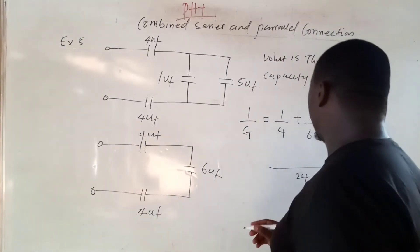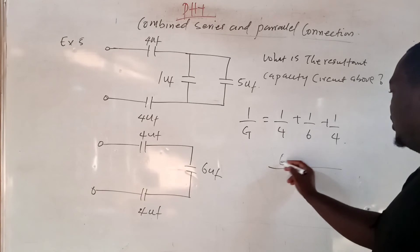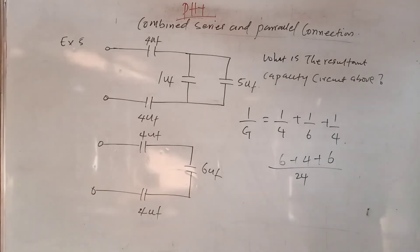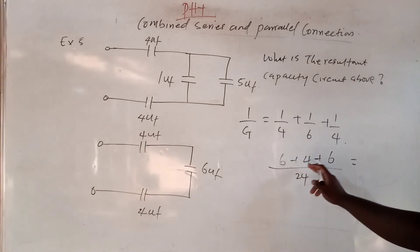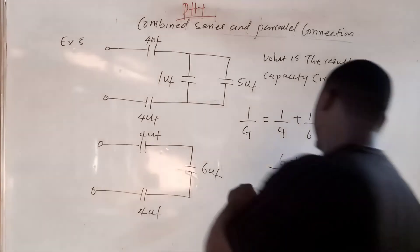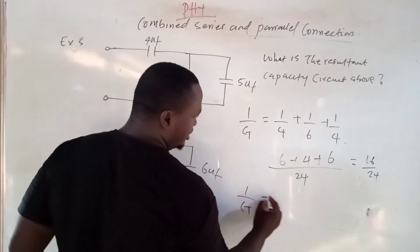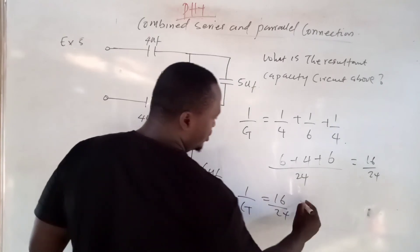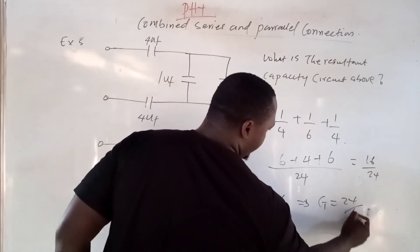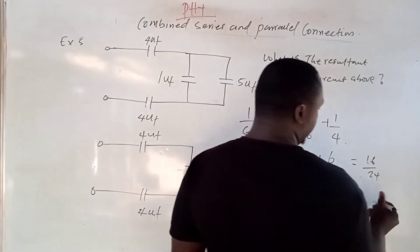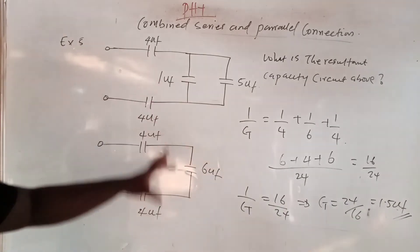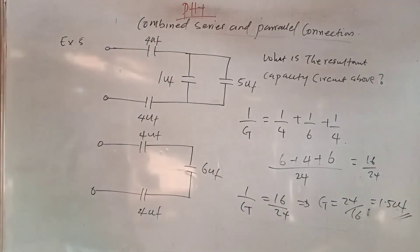The LCM is 24. This gives 6 + 4 + 6 = 16. So 1/CT = 16/24. Inverting, CT = 24/16 = 1.5 microfarad. Always be careful to know how to resolve the circuit — that is why I am taking my time to solve many examples.